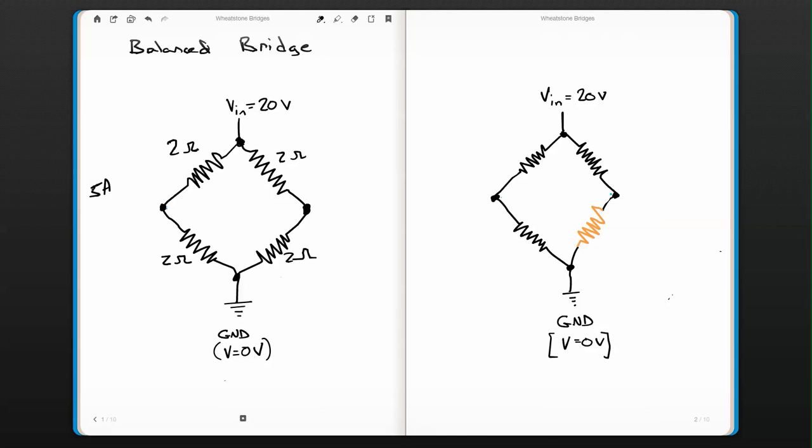Now, some of you may realize that that would probably melt any electronics, but whatever. We'll roll with it because it makes for easy numbers. And here we have five amps going across this side of the bridge and we have five amps going across this side of the bridge because it's totally balanced.